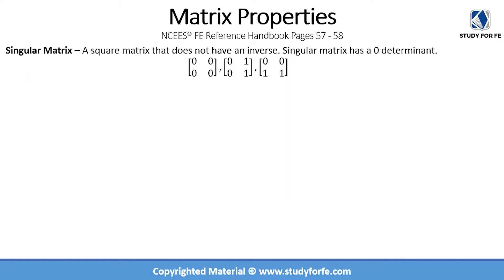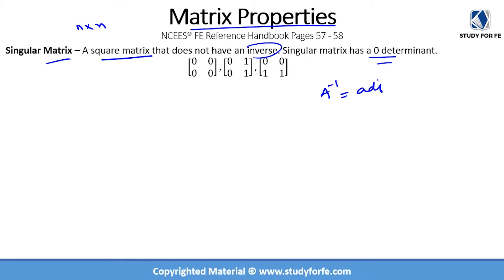Before we dive into matrix properties I want to introduce a couple of definitions which are relevant and will help us understand matrix properties better. The first one is singular matrix. A singular matrix is a square matrix — an n by n matrix where the number of rows and columns are equal — which does not have an inverse. A singular matrix has a zero determinant. Whenever you have a matrix with a zero determinant it cannot have an inverse, because the inverse of a matrix is equal to the adjoint of the matrix divided by its determinant.